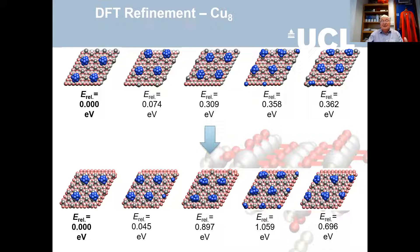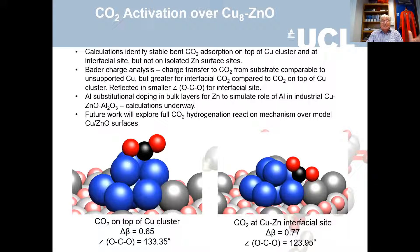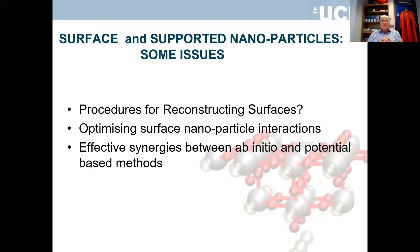Comparing potentials with DFT: the absolute values of energies are similar, the ranking of different structures is pretty similar, and the lowest energy structure is the same with DFT as with the potentials. Michael is now looking at the actual catalytic properties — how CO2 is adsorbed on the surface of these nano clusters and how it is then hydrogenated in the catalytic mechanism leading to methanol formation. Some open issues: procedures for reconstructing surfaces using this Monte Carlo algorithm need further thought, and we need effective synergies — closer interaction between ab initio and potential-based methods.